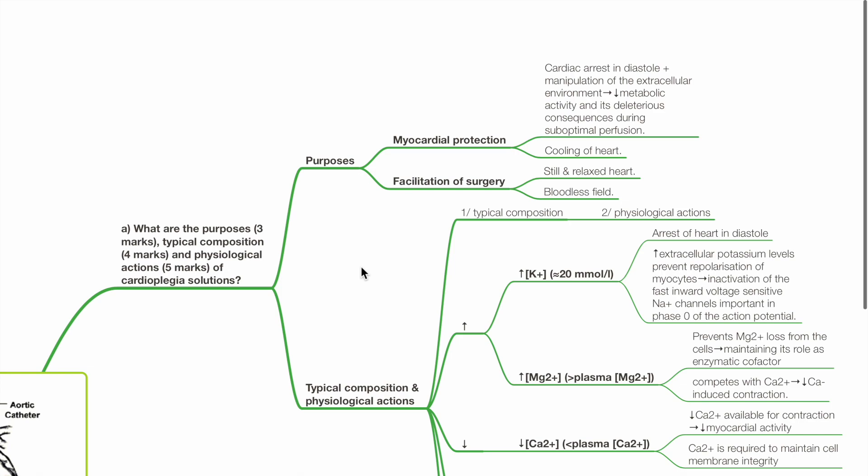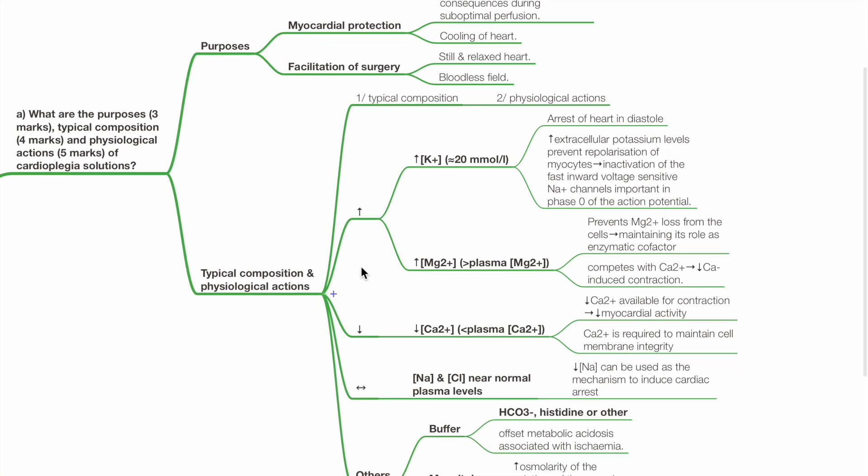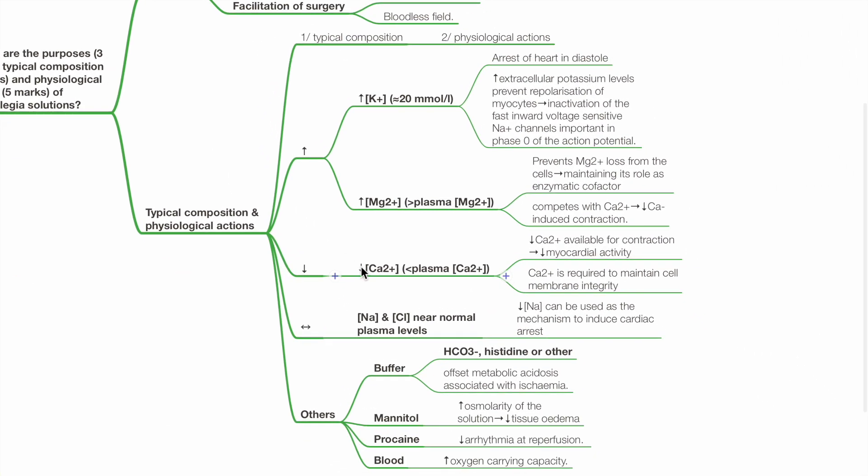Typical composition and physiological actions. Potassium concentration is high, about 20 millimoles per liter. This enables arrest of the heart in diastole. High extracellular potassium levels prevents repolarization of myocytes and inactivation of the fast inward voltage-sensitive sodium channels, important in phase 0 of the action potential.